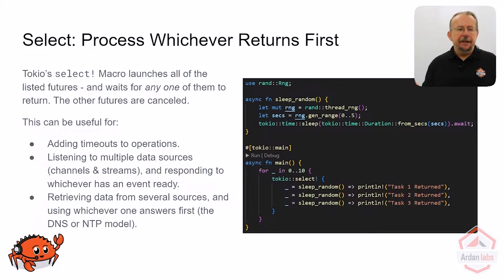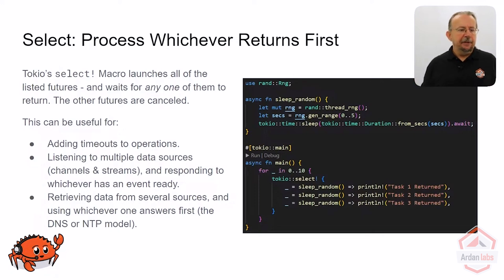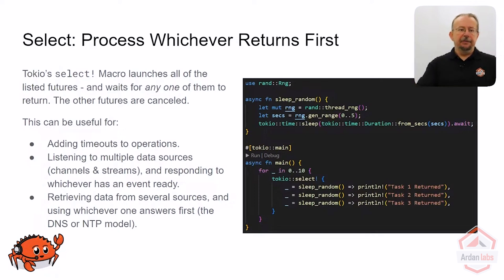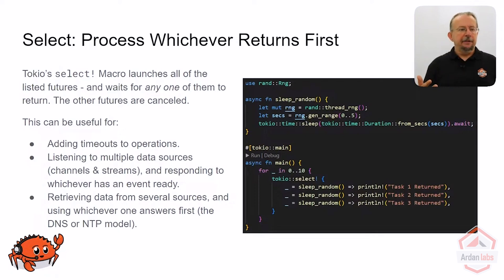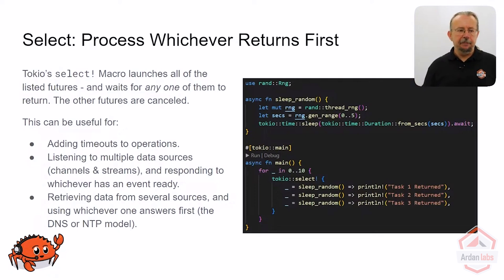Select is great. Here we have a function called sleep_random. It generates a random number and sleeps for a certain amount of time. When you run the program, it will select one of these at random and tell you which one returned first. Tokio will run them all in the background. We're using Tokio's sleep rather than system thread sleep to avoid blocking.